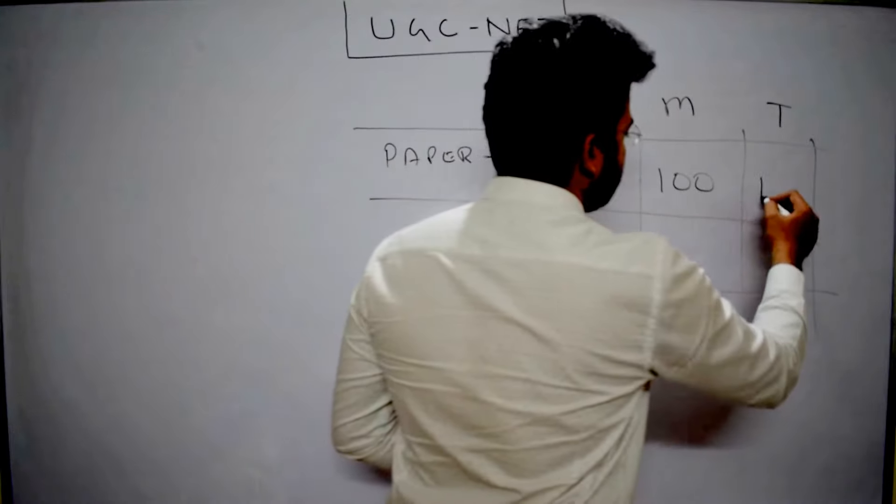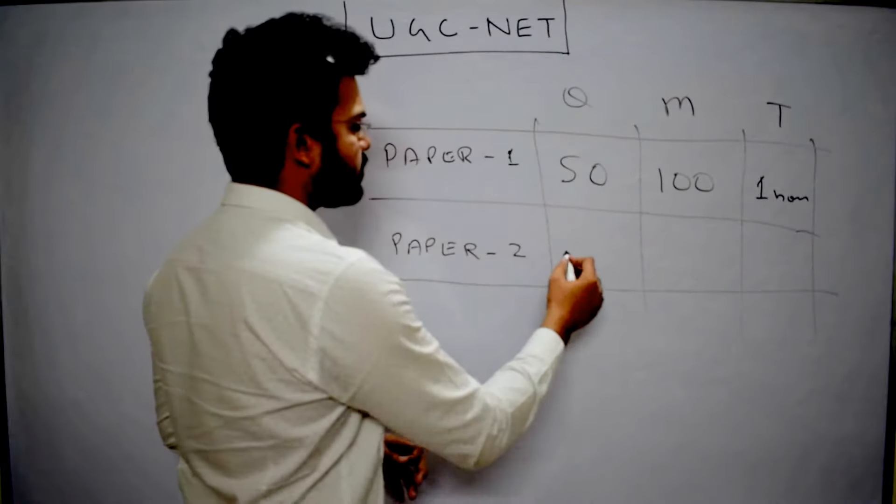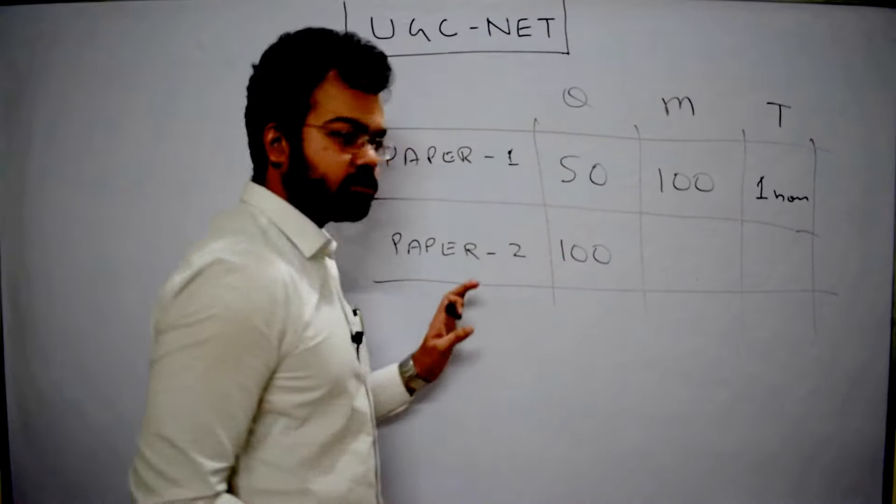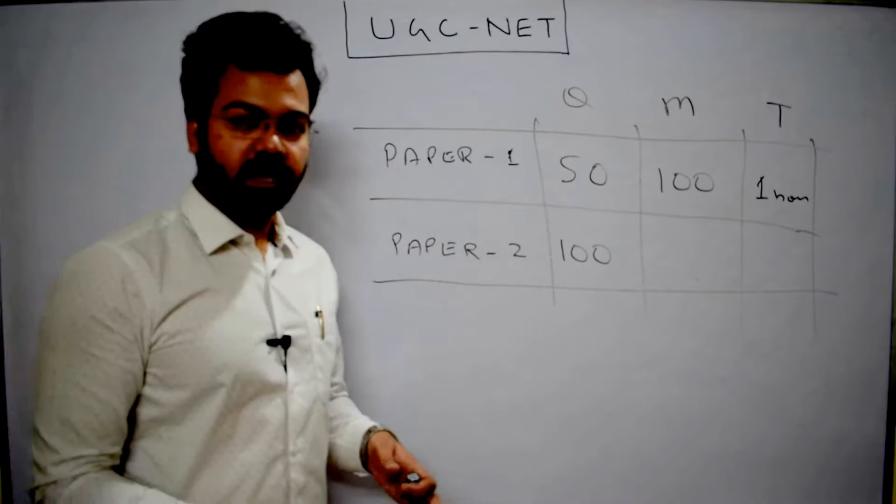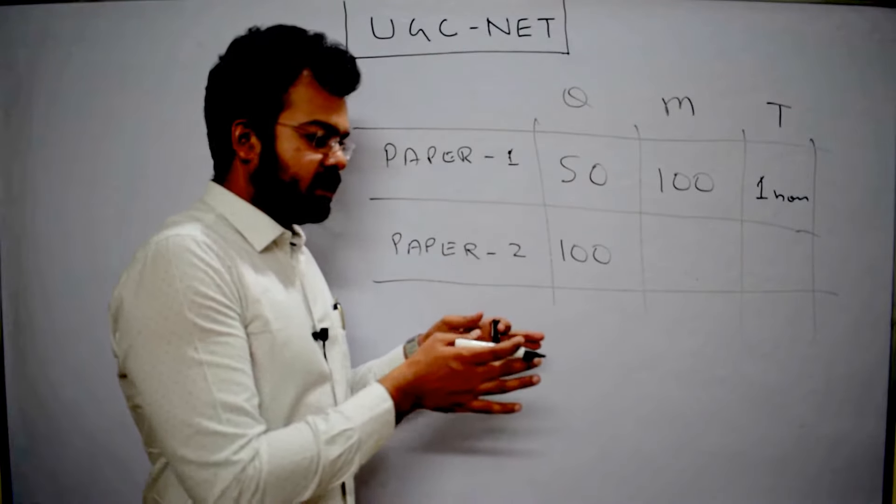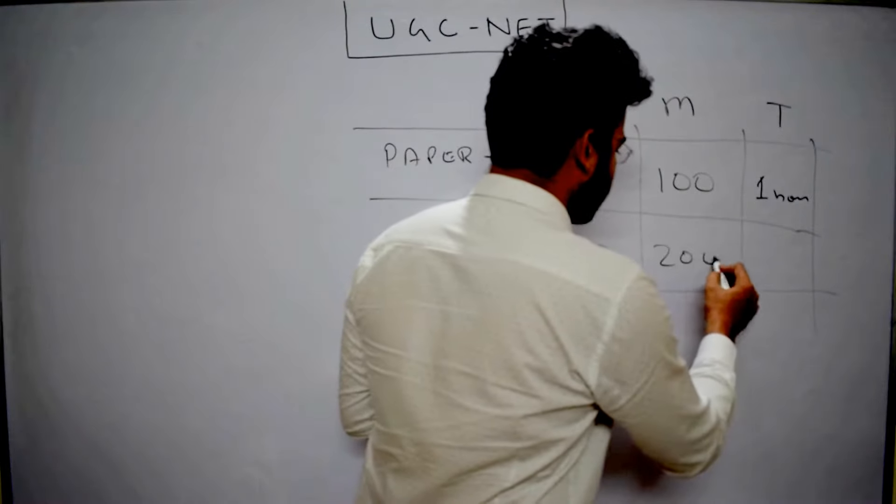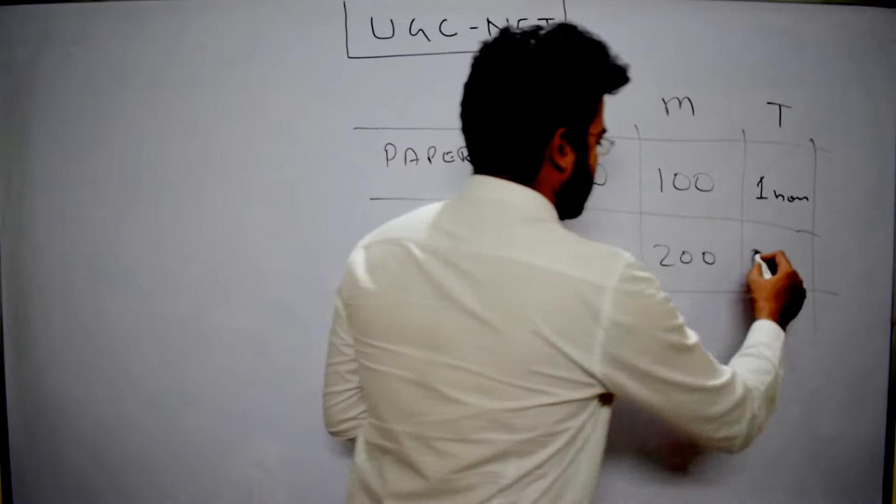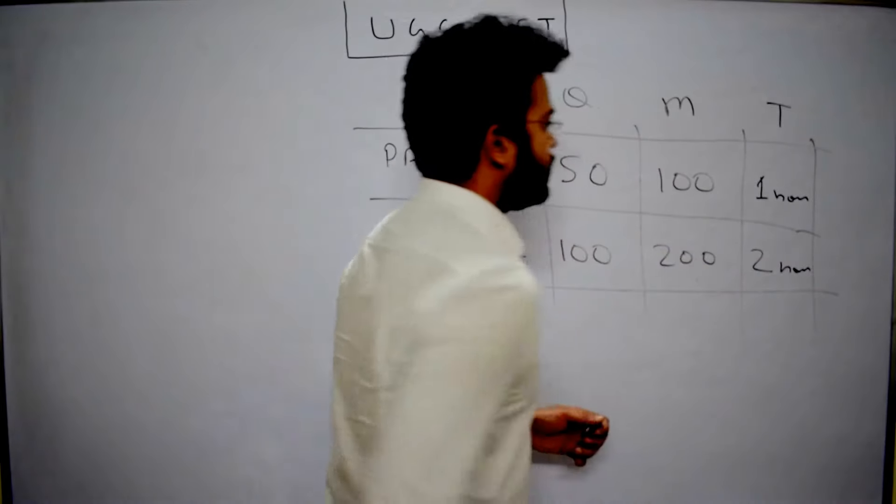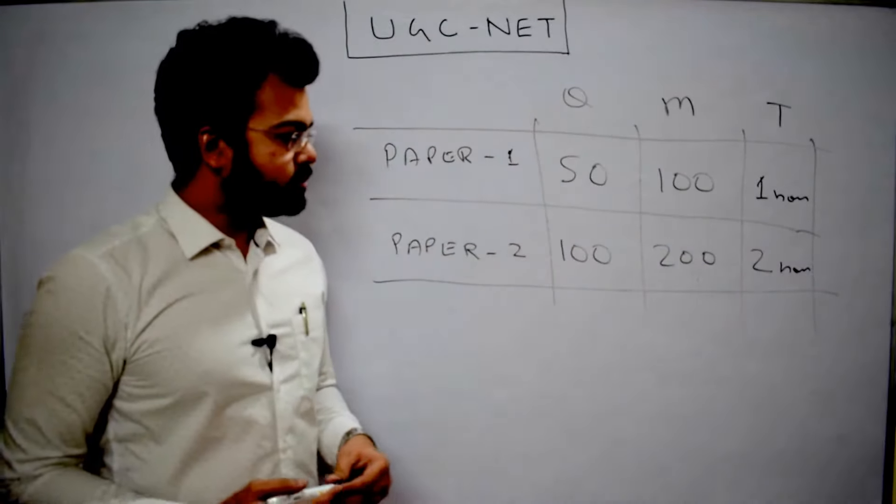Talking about paper two, there will be 100 questions of your particular subject. For example, if you have done MA in economics, paper two will consist of only economics questions. The marks given is 200 marks and the time limit is two hours.